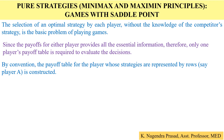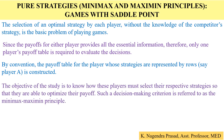By convention, the payoff table for the player whose strategies are represented by rows is constructed. In general, player A's strategies are represented by the rows and player A is considered the winner, while player B's strategies are represented by the columns and player B is considered the loser. The objective is to know how these players must select their respective strategies so that they are able to optimize their payout.